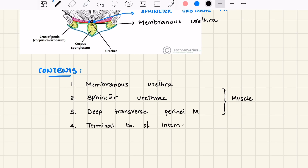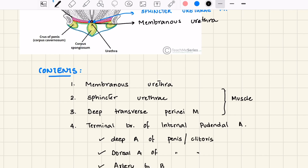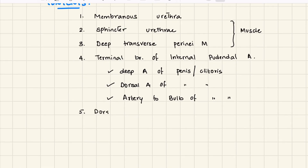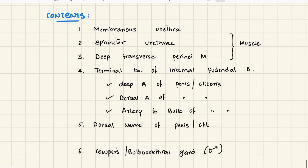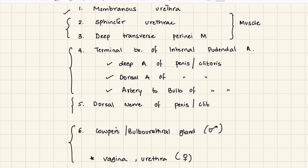We have the terminal branches of the internal pudendal artery, which include the deep artery of the penis or clitoris, the dorsal artery of the penis or clitoris, and the artery to the bulb of the penis or clitoris. We also have the dorsal nerve to the penis or clitoris. Additionally, there are the Cowper's or bulbo-urethral glands in males, and the vagina and urethra in females.